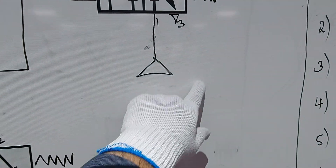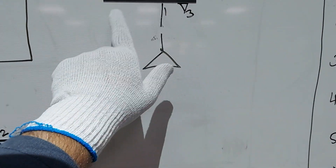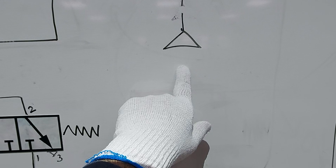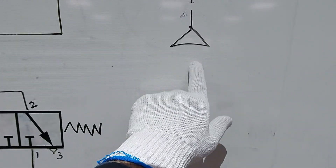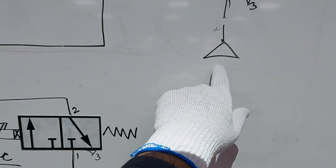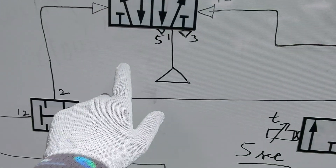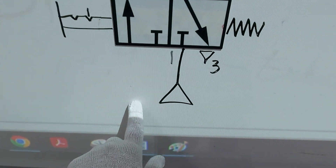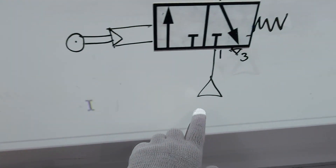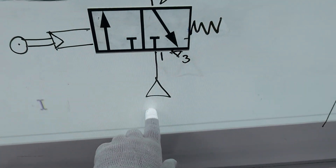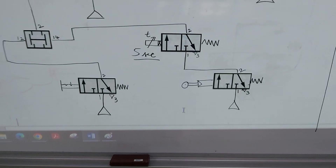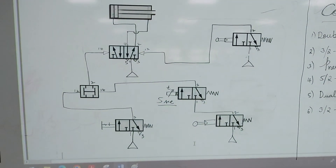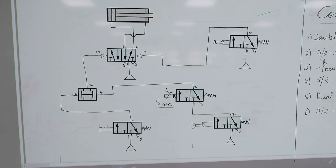The triangles in the diagram represent the supply source distributor. Each component connected to a triangle is connected to the air supply distributor. The selector switch, the timer, and the rollers are all connected to the distributor. As a whole, this is the complete circuit diagram.